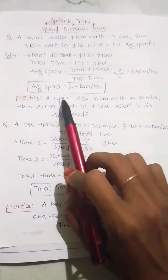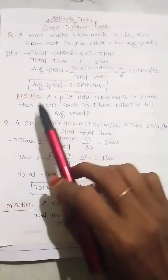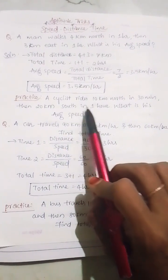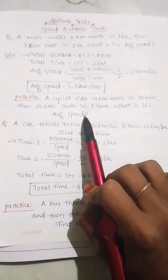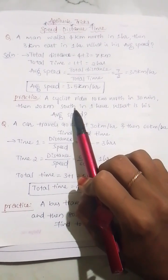A cyclist rides 10 km north in 30 minutes, then 20 km south in 1 hour. What is his average speed? Calculate this and let me know in the comment section. Thank you for watching.